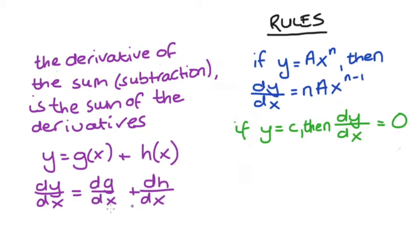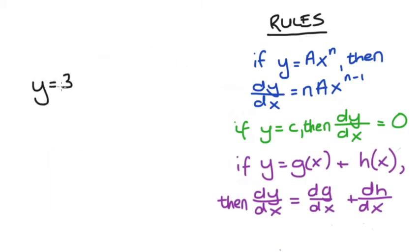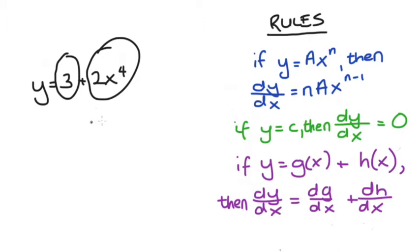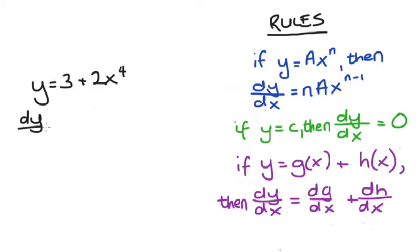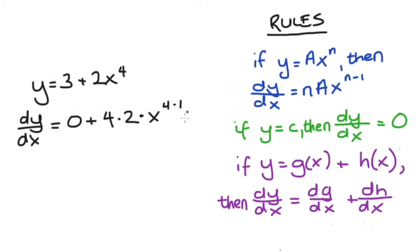This might seem confusing, but all it means is that if we have a function where we have terms adding up together — say y is equal to 3 plus 2x to the power of 4 — then to take the derivative of y with respect to x, we take the derivative of the first term (3) and add it to the derivative of the term 2x to the power of 4. The derivative of 3 is zero since it's a constant. Then for 2x⁴ we take 4 out the front, multiply by 2, and take 1 off the exponent: 4 minus 1. This all simplifies to dy/dx equals 8x to the power of 3.